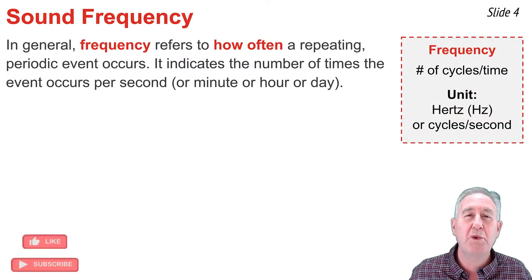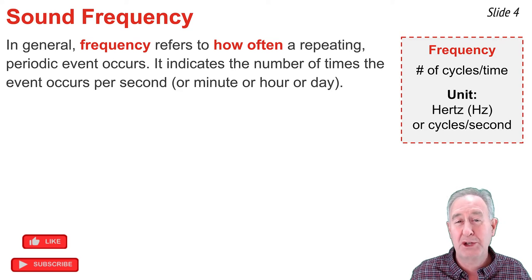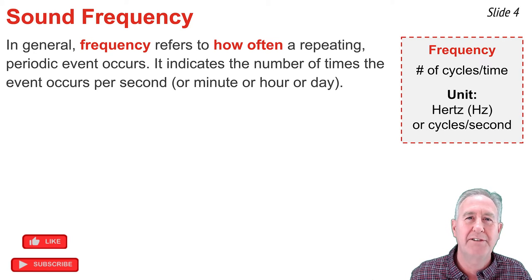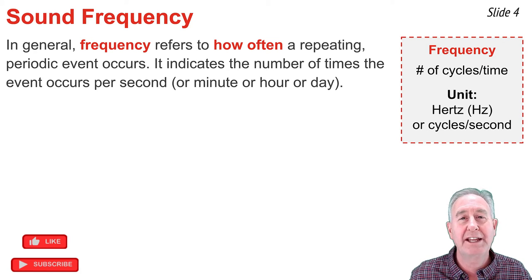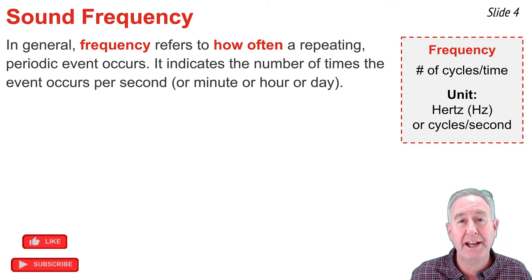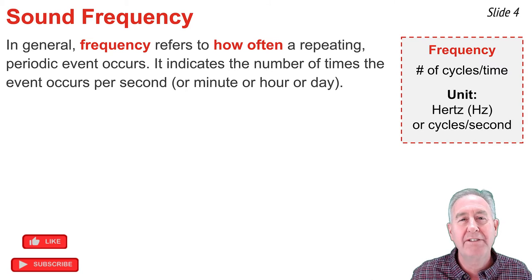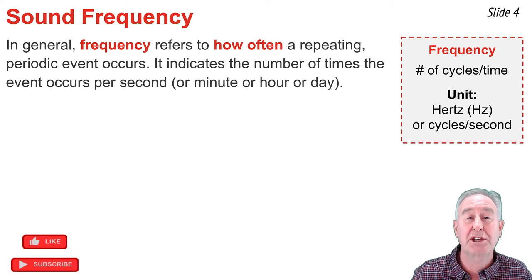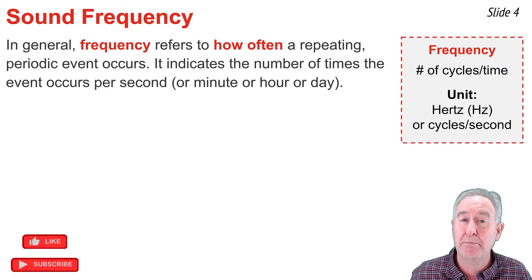Frequency is one property of a sound wave. In general, the word frequency refers to how often a periodic and repeating event repeats itself. It indicates the number of times the event occurs per second, per minute, per day, or per year. If the event happens to be the orbit of the Earth about the sun, we would describe its frequency as one time per year.